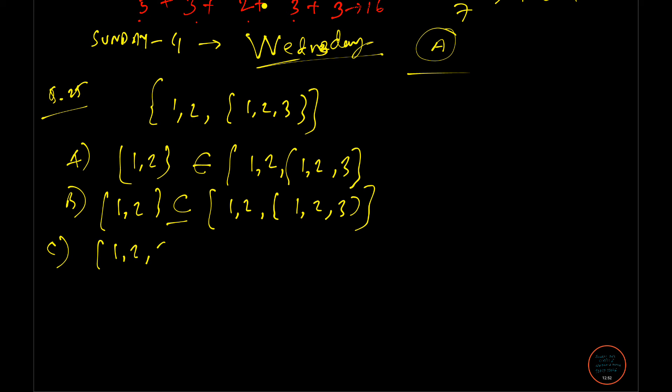Option C: {1,2,3} is subset of {1,2,{1,2,3}}. And coming to D: 3 belongs to {1,2,{1,2,3}}. Not so very complicated. But the concept is very important over here.